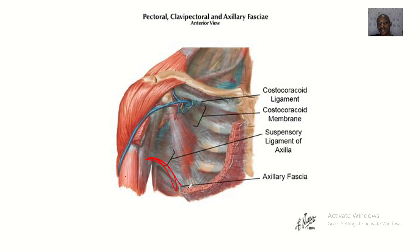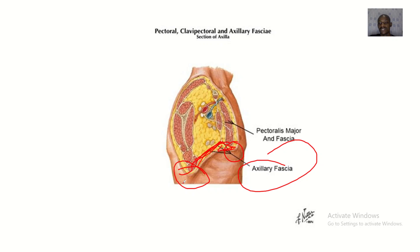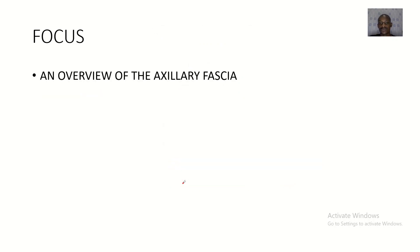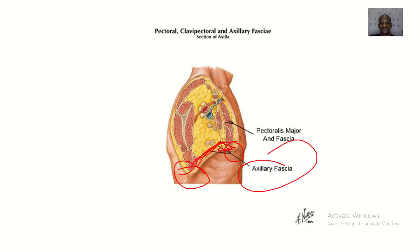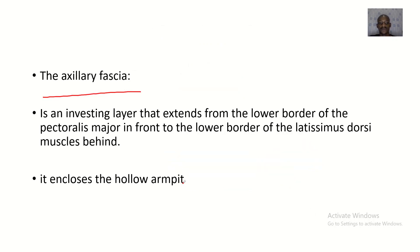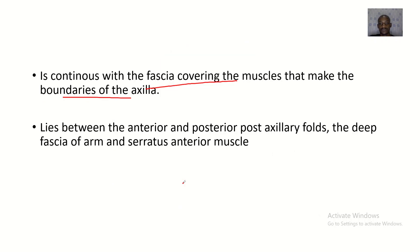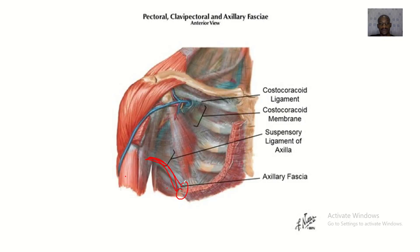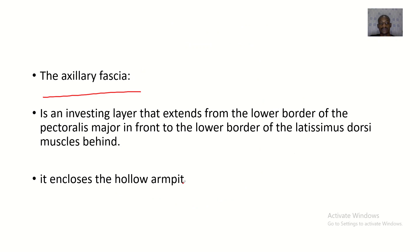In summary, the axillary fascia extends from the lower border of the pectoralis major going behind to the latissimus dorsi. That's it about the anatomy of the axillary fascia.